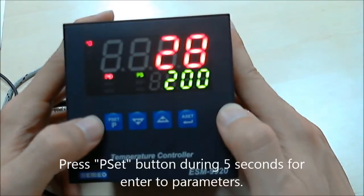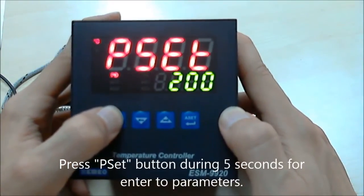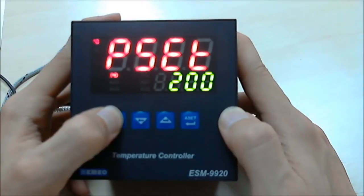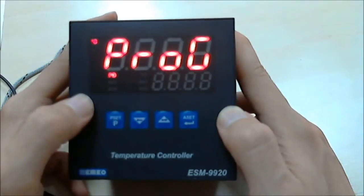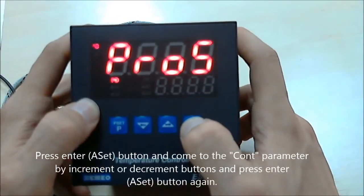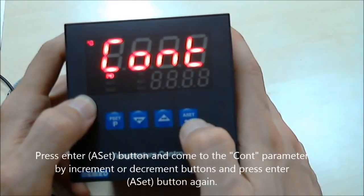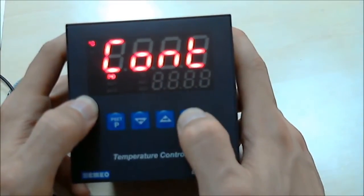So press the program set button for 5 seconds, and then press the enter button. By increment or decrement buttons, come to the control parameter and press enter button.